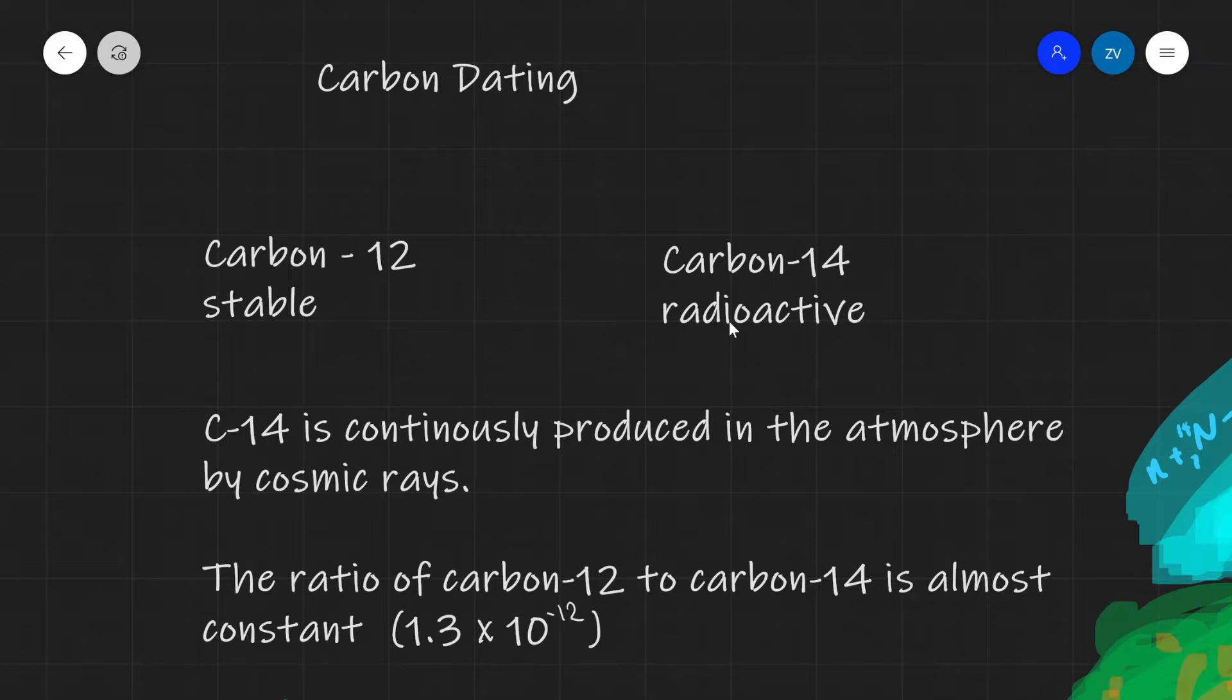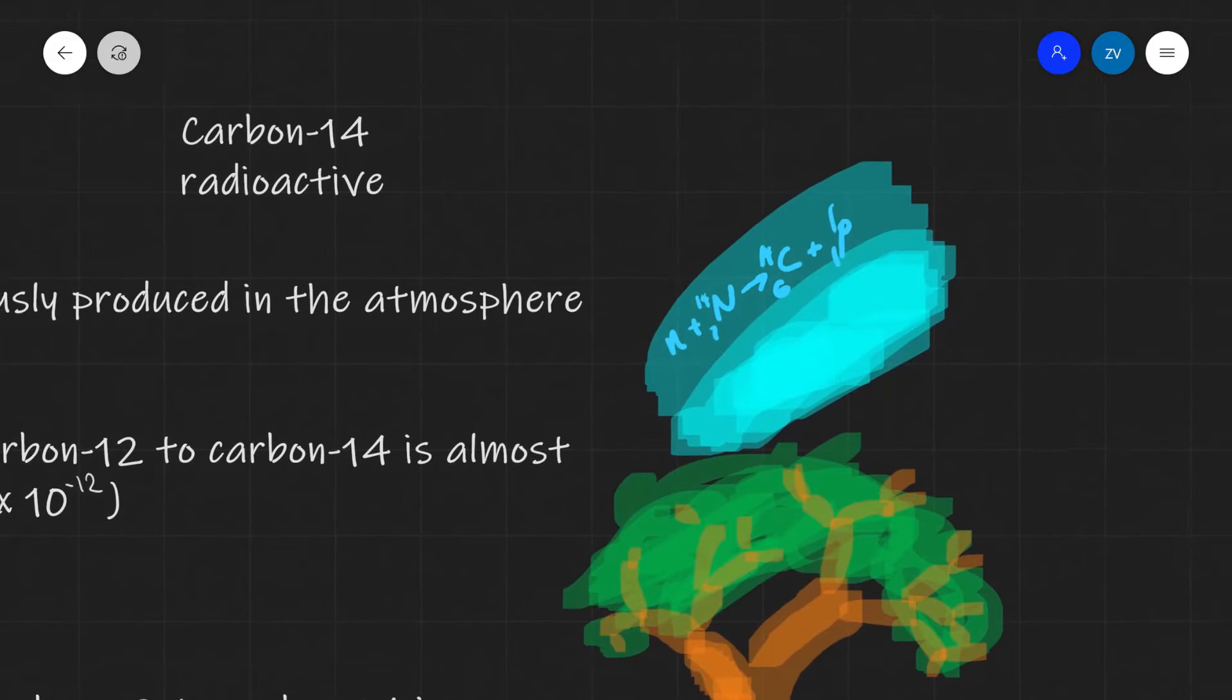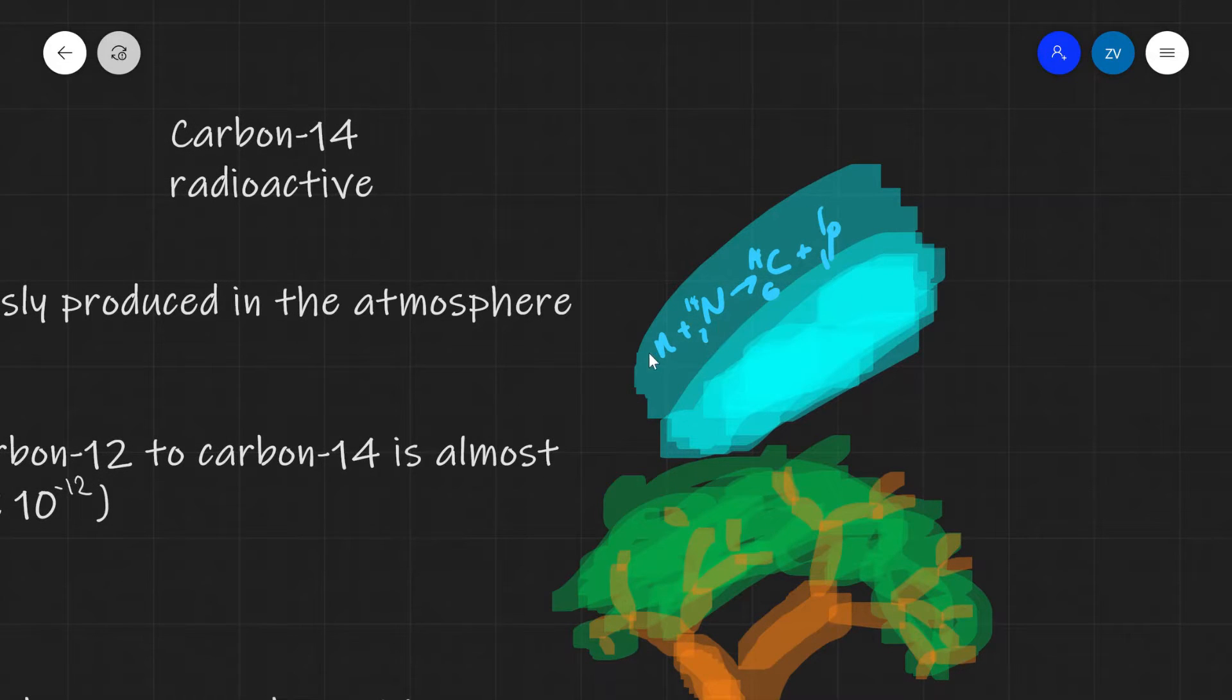Carbon-14, the radioactive isotope, is continuously produced in the upper reaches of the atmosphere by cosmic rays. Every once in a while, you'll get a high-speed particle such as a neutron which might interact with nitrogen, and the result could be carbon-14 and a proton.